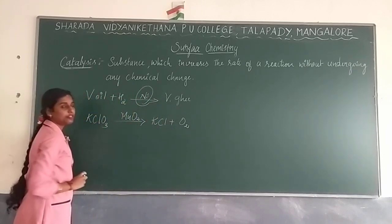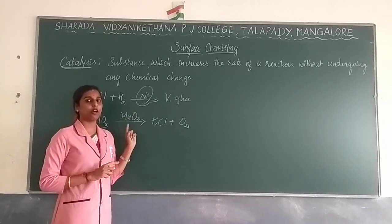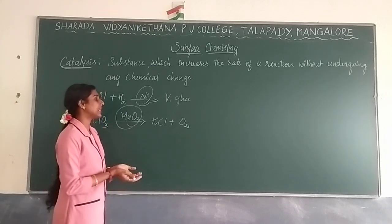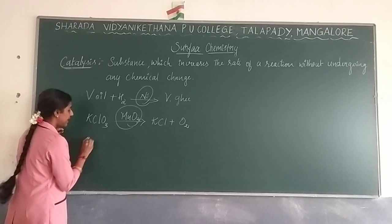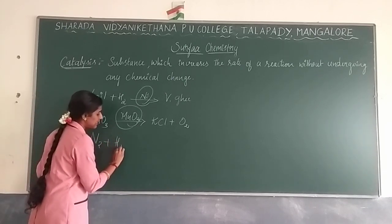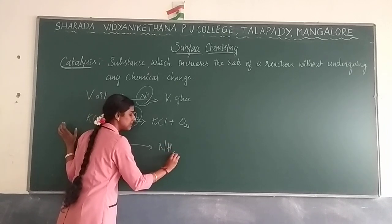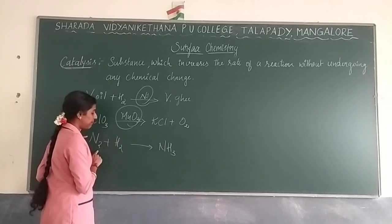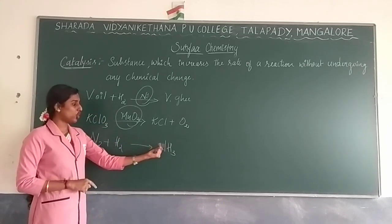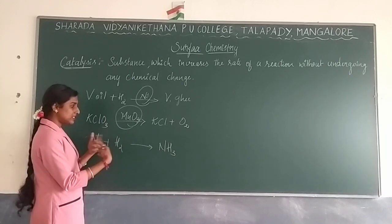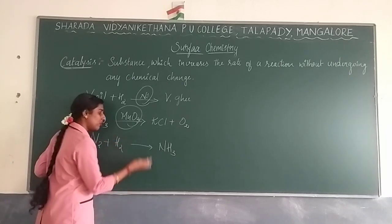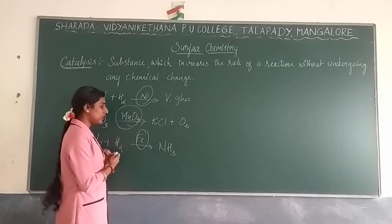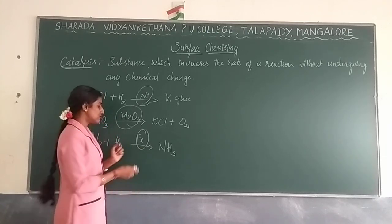For example, the decomposition of potassium permanganate is done in the presence of manganese dioxide as a catalyst, which speeds up the reaction. Another example: the synthesis of ammonia from nitrogen and hydrogen takes a longer time, so we use a catalyst to make the reaction faster, increasing the rate of reaction.